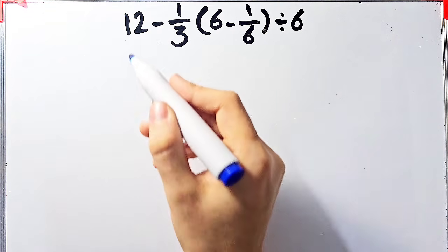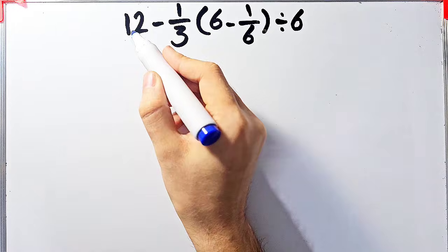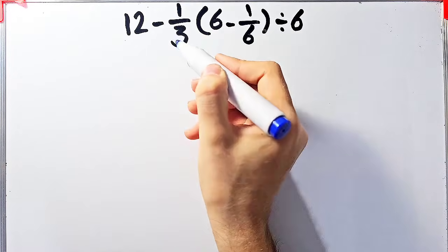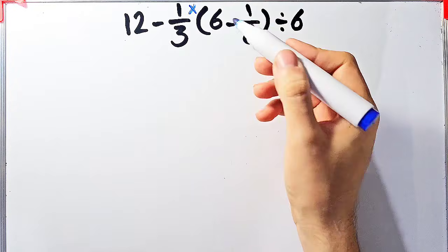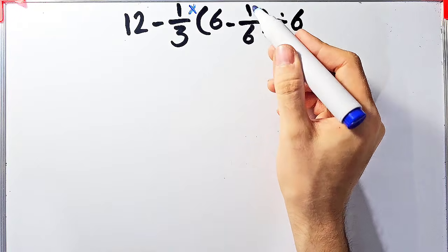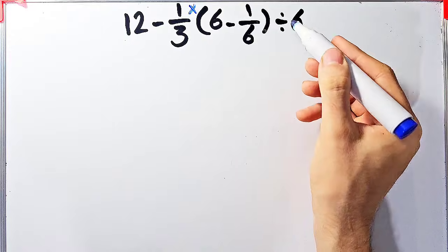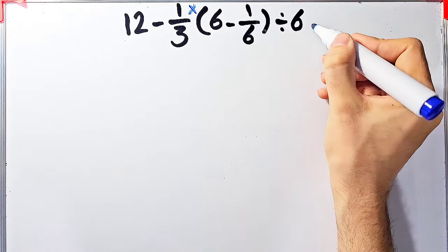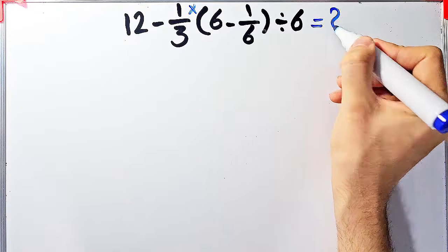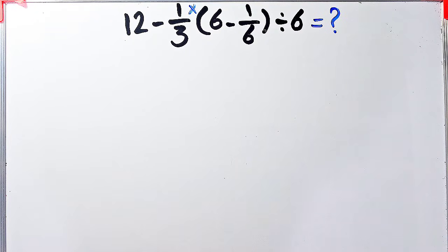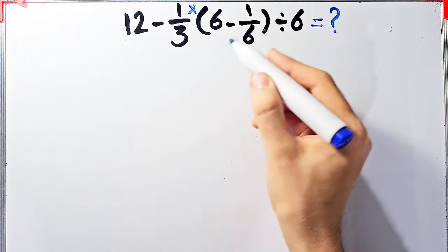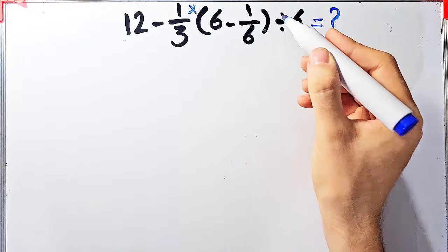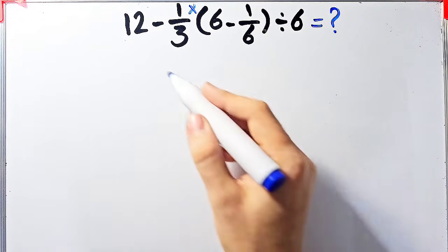Let's solve another question about the PEMDAS rule: 12 minus 1/3, then times (6 minus 1/6), divided by 6. In this question we have subtraction, multiplication, parentheses, and division.